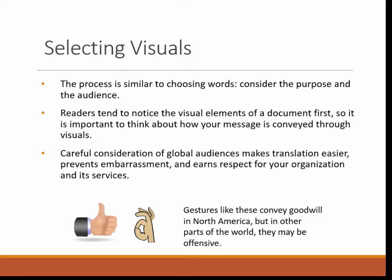Now let's move to what you should look for when selecting visuals to accompany your text. The process is similar to choosing words — you need to consider the purpose and the audience, who your readers are, and what you want them to get out of it. Readers tend to notice the visual elements of a document first, so it is important to think about how your message is conveyed through visuals. Do they convey information in a way your readers will understand? Will they reach the same conclusion you want them to reach? Whenever you're choosing visuals, you need to carefully consider global audiences.